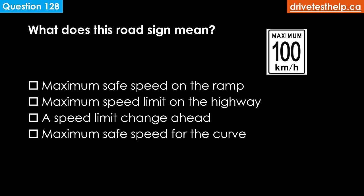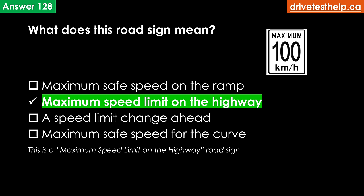What does this road sign mean? Options: maximum safe speed on the ramp; maximum speed limit on the highway; a speed limit change ahead; maximum safe speed for the curve. The correct answer is maximum speed limit on the highway.